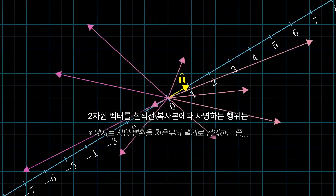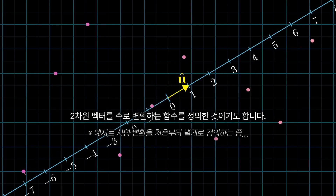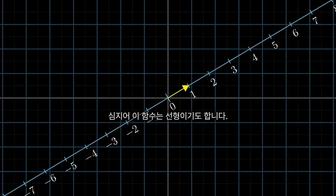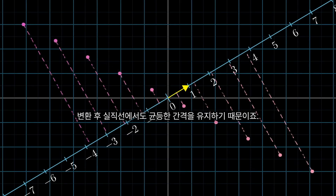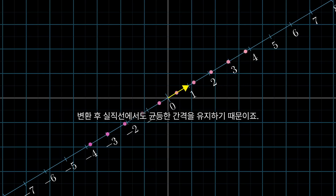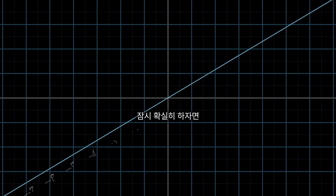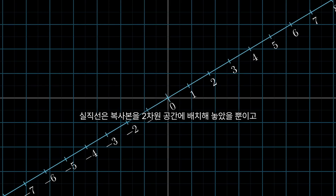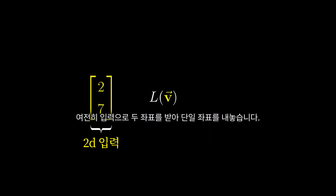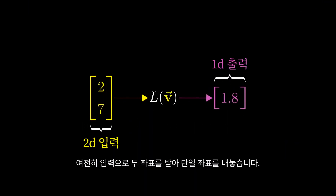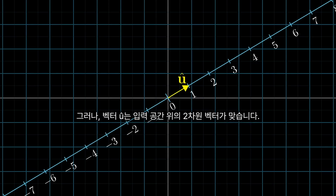If we project 2D vectors straight onto this diagonal number line, in effect we've just defined a function that takes 2D vectors to numbers. What's more, this function is actually linear, since it passes our visual test that any line of evenly spaced dots remains evenly spaced once it lands on the number line. Just to be clear, even though I've embedded the number line in 2D space like this, the outputs of the function are numbers, not 2D vectors — you should think of a function that takes in two coordinates and outputs a single coordinate. But that vector u-hat is a two-dimensional vector living in the input space, just situated in such a way that overlaps with the embedding of the number line.